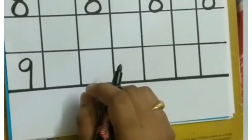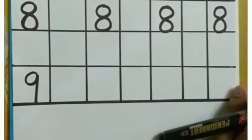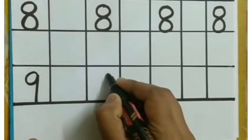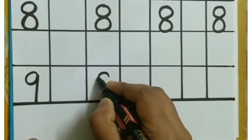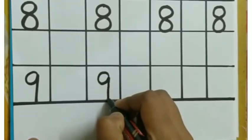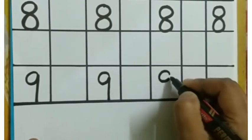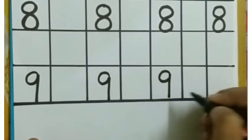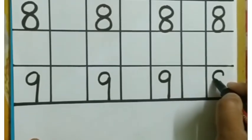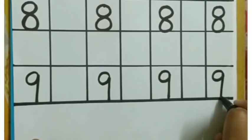So next is number 9. How will we write number 9? A right curve joined with a standing line. A right curve joined with the standing line.